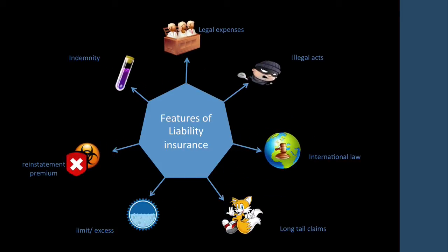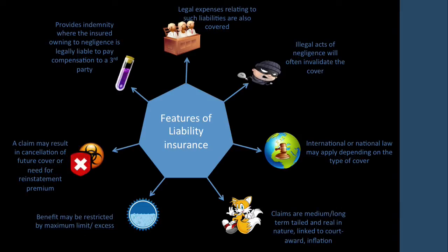Let's look at the features of liability insurance in a bit more detail. The first thing is it provides indemnity where the insured, owing to negligence, is legally liable to pay compensation to a third party. So if you're driving and you crash into a Ferrari, you're covered. It'll also cover legal expenses — if that person sues you, you're covered. However, if you were drunk driving, stole the car, or doing something illegal, your cover is invalidated.